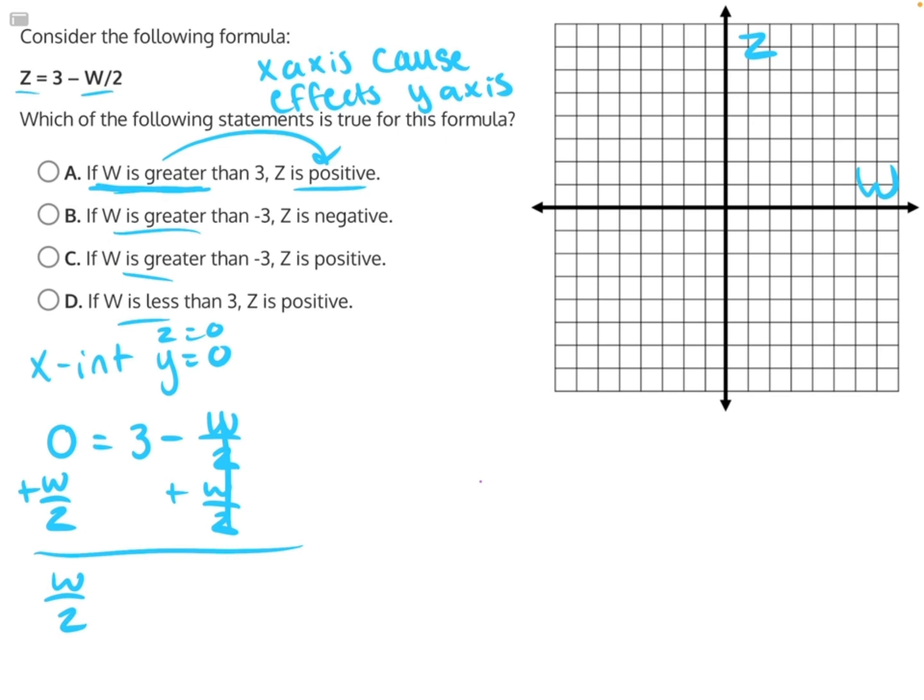Giving us w/2 = 3. w is being divided by 2, so the opposite operation here is multiplying both sides by 2. These will cancel, giving us w = 6, or the coordinate point (6, 0).